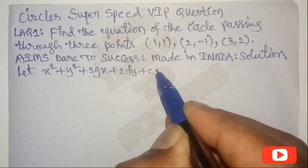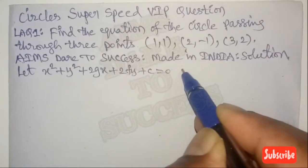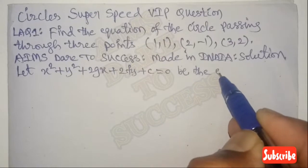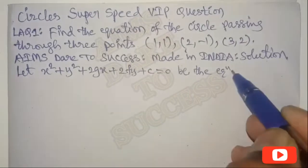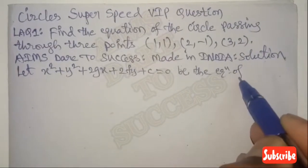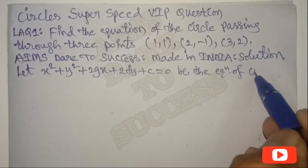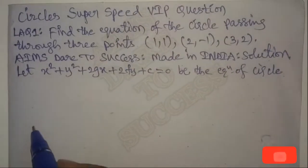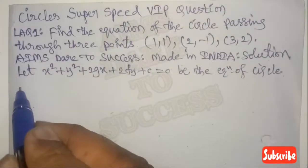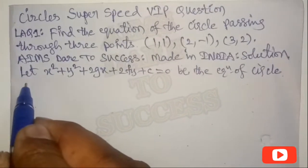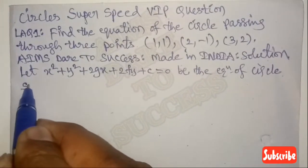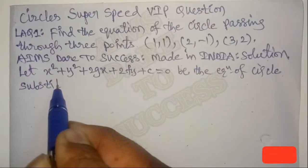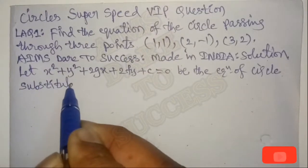The equation of the circle in standard form is: x² + y² + 2Gx + 2Fy + C = 0. This is the equation of the circle. If you don't know this standard equation of the circle, we can't get the answer. This is a standard equation of the circle, my dear students.